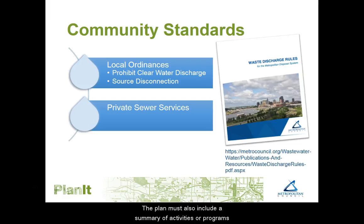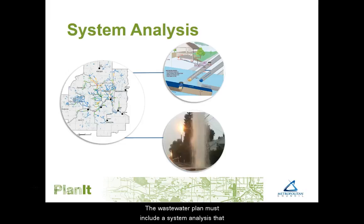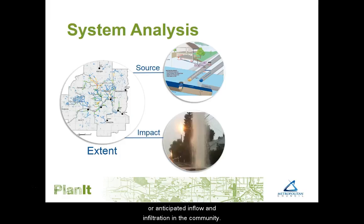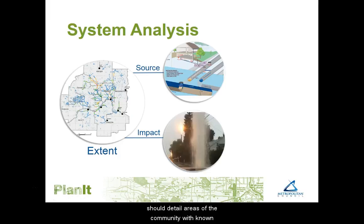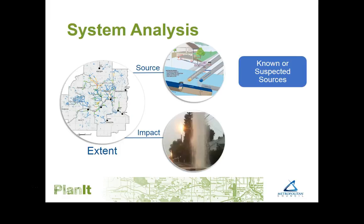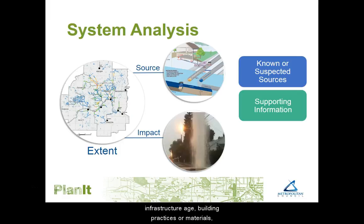The plan must also include a summary of activities or programs intended to address I&I from private property sources. The wastewater plan must include a system analysis that describes the extent, source, and significance of existing or anticipated inflow and infiltration in the community. A complete system analysis should detail areas of the community with known or suspected sources of I&I, based on information such as previous studies, infrastructure age, building practices or materials, soil conditions, or topography.